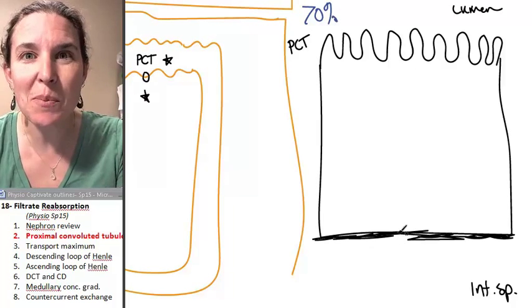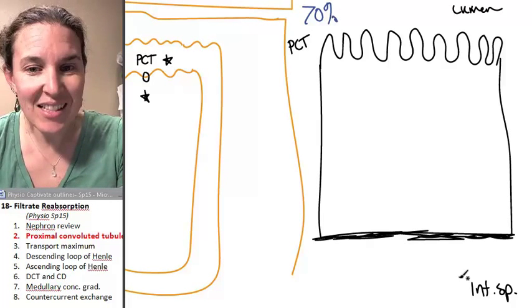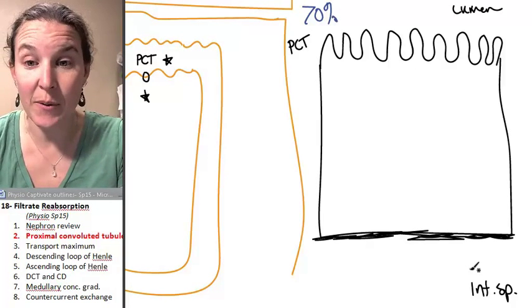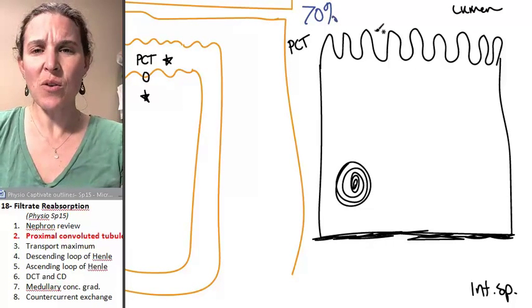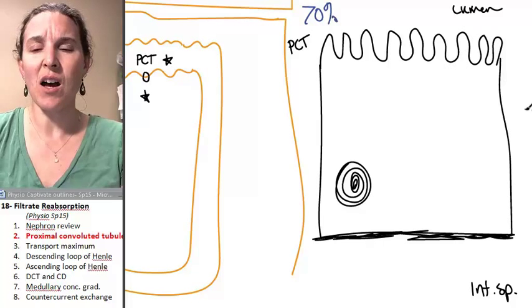So there's a basement membrane, and then this is all interstitial space out here. We have a nucleus. That's important. And what did you notice? What did I just draw up on the top?